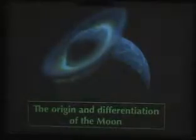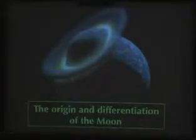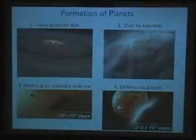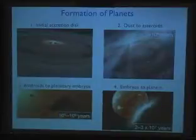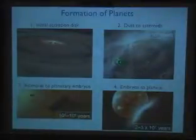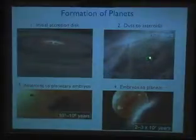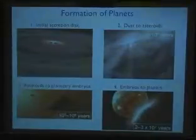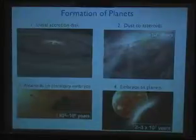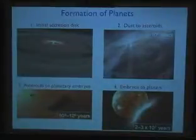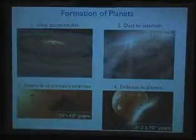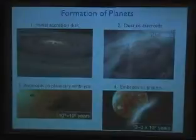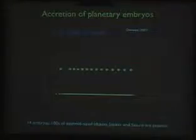The first part is the origin and differentiation of the Moon. You will hear more about the origin of the planets in the talk later this afternoon, so I'm just going to go through the early part very briefly. The idea is that you start with a nebular cloud which collapses into an accretion disk, and over about a million years or so, these dust particles stick together or accumulate gravitationally, forming asteroidal-sized objects about tens to 100 kilometers in diameter. Over another million years, these asteroids accrete into larger objects called planetary embryos, roughly the size of the Moon or Mars — about 1,000 kilometers in diameter. Then over the next 100 million years or so, these objects collide and form larger objects, forming the planets we see today.